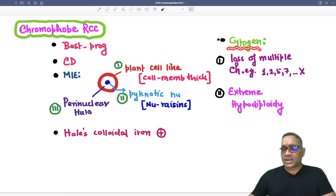On cytogenetic analysis, we will find the confirmatory test. What will be the important things? Loss of multiple chromosomes will be present. For example, loss of chromosome 1, 2, 5, 7, X chromosome.